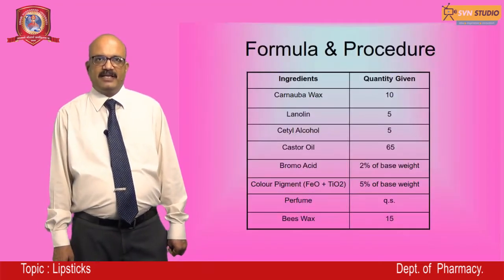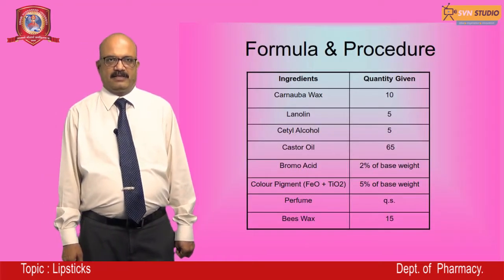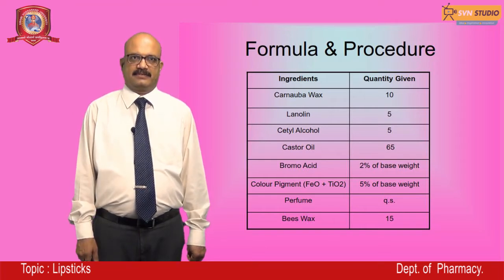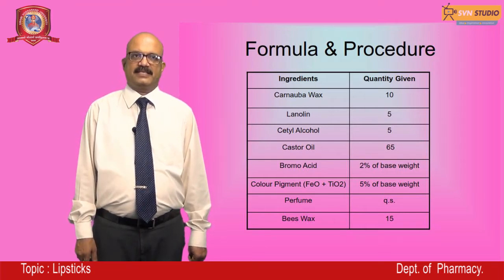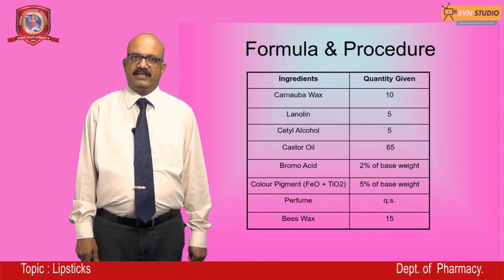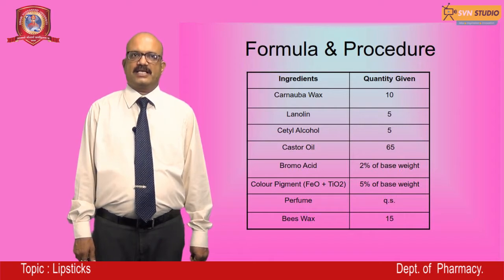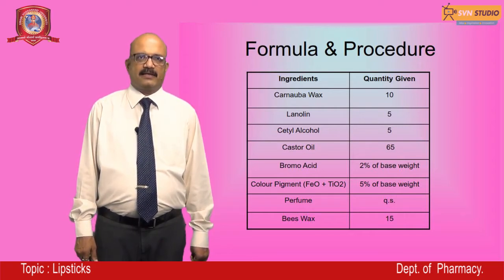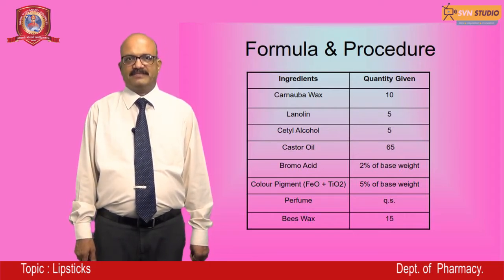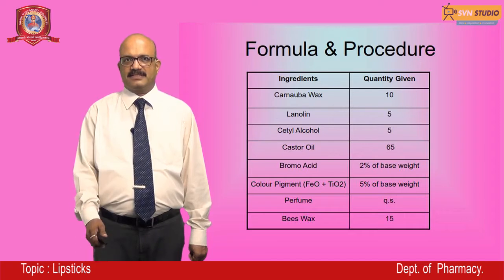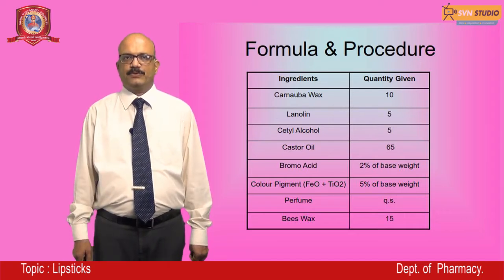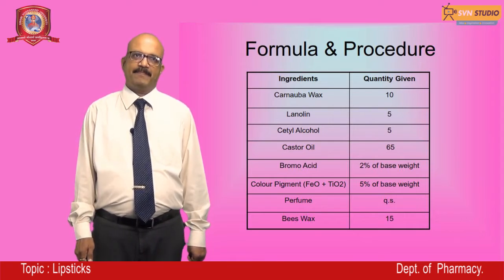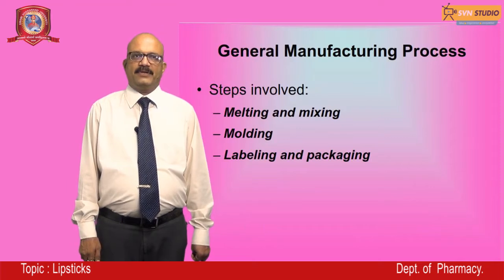An example lipstick formula contains: carnauba wax, lanolin, cetyl alcohol, castor oil, bromo acid, color pigments, perfume, and beeswax, with percentages given against each ingredient.